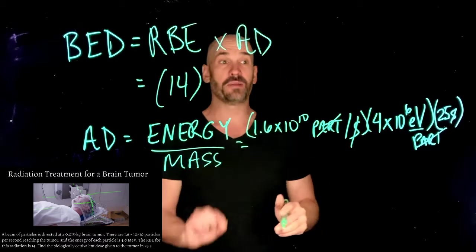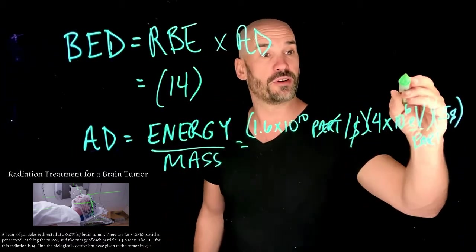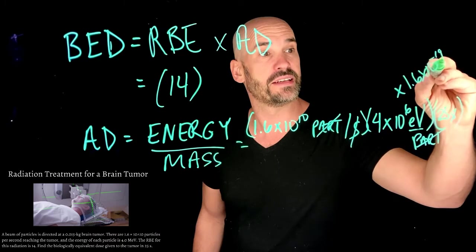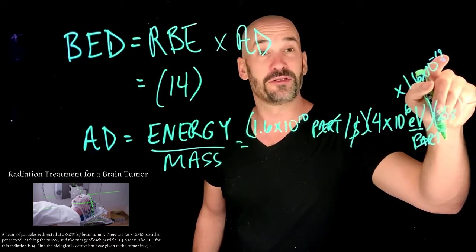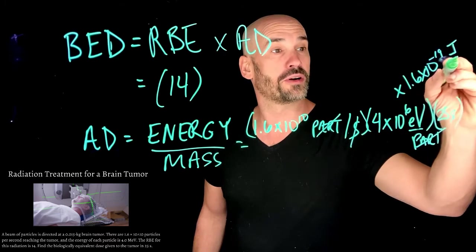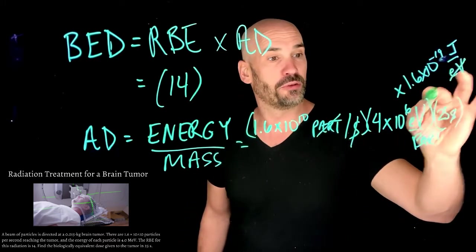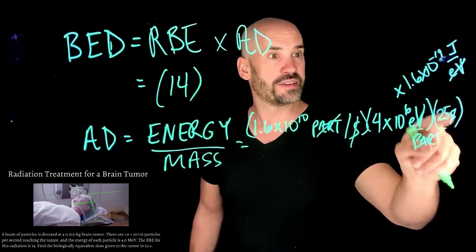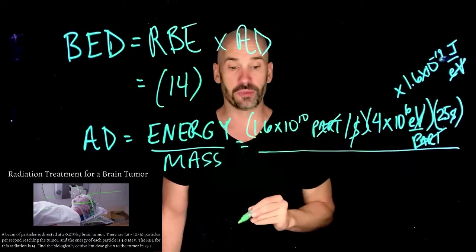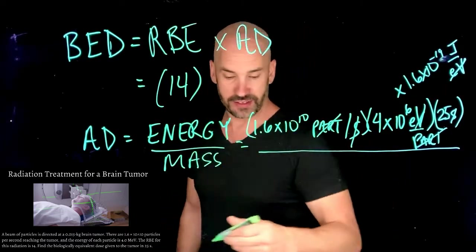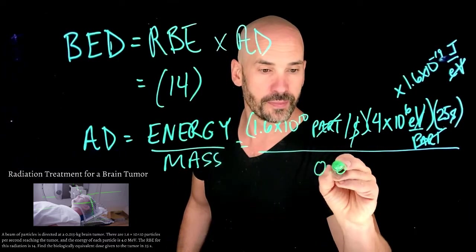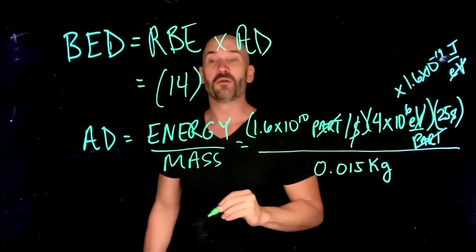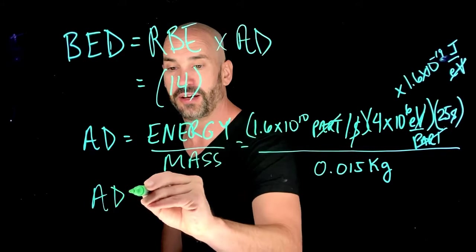Is that okay? No, that's not the SI unit. Electron volts needs to be converted to joules. Remember, there is 1.6 times 10 to the minus 19 joules per electron volt. Now electron volts cancels with that. If we do this times this times this times this, all divided by the mass of the tumor, what was the mass of the tumor? The mass of the tumor was 0.015 kilograms. Now we're getting somewhere. We can see very easily, if we put all that into our calculator, that the absorbed dose is about 17 joules per kilogram.